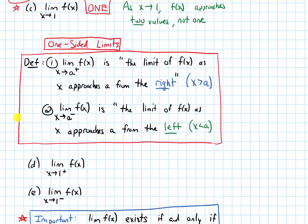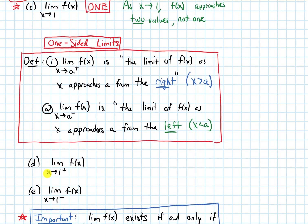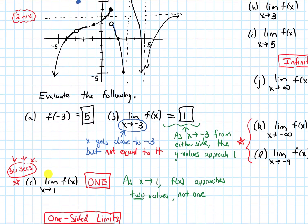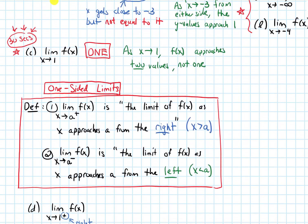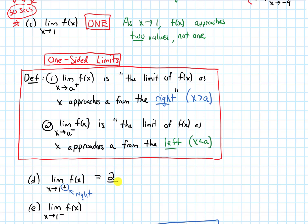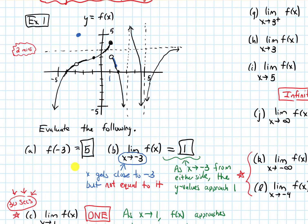Part D asks: what's the limit of my function as x approaches 1 from the right — with a little plus sign? From the right-hand side of 1, we are getting super close to this hole, and the y values are getting close to 2, because that's the y value of the hole. So that limit is 2. With a limit, we don't care what's happening exactly at 1 — we only care what's happening just really, really close to it from the right.